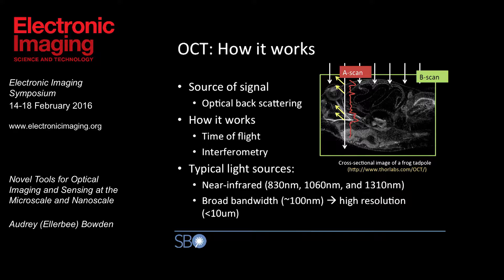If we take this A-scan and repeat the process at various locations across the sample, we achieve what we call a B-scan, which gives us our cross-sectional image. We can do this in three dimensions to achieve a three-dimensional volume. We're using a time-of-flight mechanism to measure where the interfaces are, but because light travels very fast, we can't measure time-of-flight directly, so we use interferometry. The light sources we typically use are in the infrared regime — 830 nanometers up to around 1,310 nanometers — to minimize water absorption. Another critical feature is using broadband light sources with a bandwidth of roughly 30 to 100 nanometers, which gives us our sectioning capability.